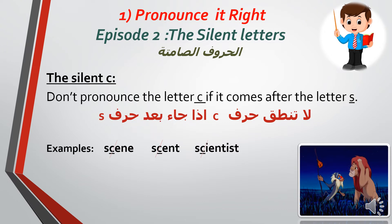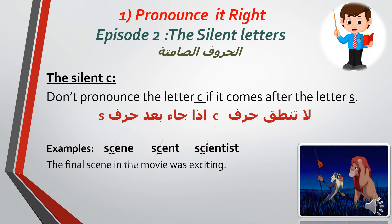I have three examples today. First example: 'scene' — meaning مشهد — notice I did not pronounce the C. Second: 'scent' — meaning رائحة — for example, 'The scent of the flower is beautiful.' Third: 'scientist' — for example, 'Ahmed Zewail is a great scientist,' meaning Ahmed Zewail is a great scholar. In all three words I did not pronounce the letter C.